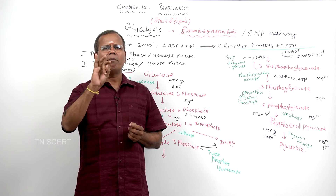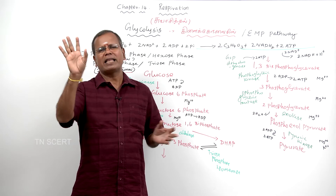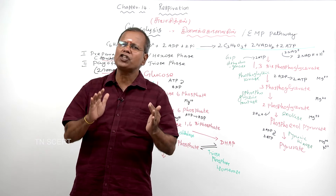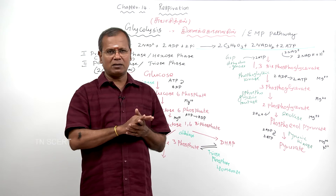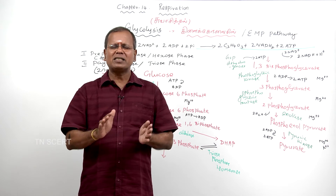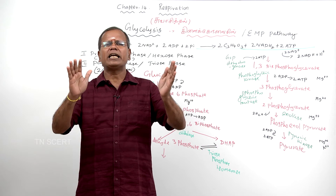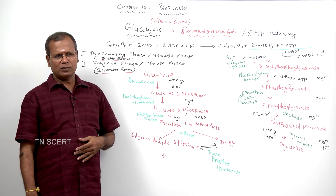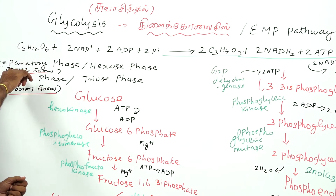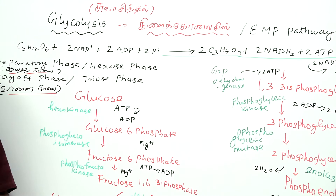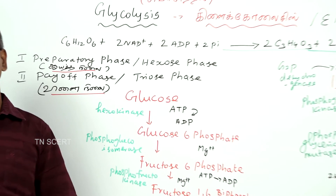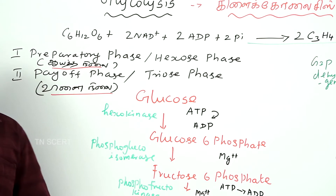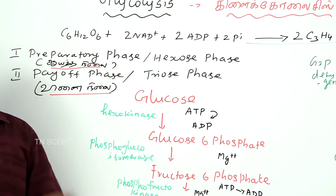This process takes place in the cytoplasm and it was first reported in the fungus yeast. Glycolysis has two phases: the first is the preparatory phase, also called the hexose phase; the second is the payoff phase, also called the triose phase.